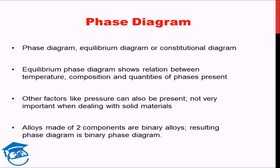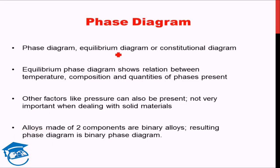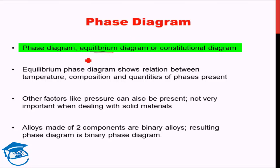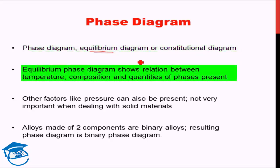Phase diagram is alternatively also known as equilibrium diagram or constitutional diagram. As discussed, it deals with equilibrium conditions — it assumes we are always in equilibrium and does not take kinetics into consideration. The equilibrium phase diagram shows the relation between temperature, composition, and quantities of different phases present, and in several cases pressure. For solids we will mainly ignore pressure and use one axis for temperature and the other for composition.